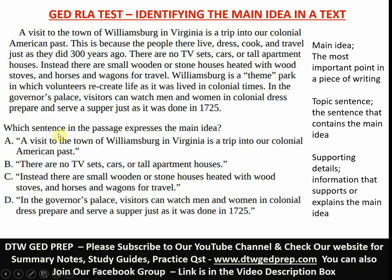So the question is: which sentence in the passage expresses the main idea? Now let's go to the passage. It says: 'A visit to the town of Williamsburg in Virginia is a trip into our colonial American past. This is because the people there live, dress, cook and travel just as they did 300 years ago. There are no TV sets, cars or apartment houses. Instead, there are small wooden or stone houses heated with wood stoves and horses and wagons for travel. Williamsburg is a theme park in which volunteers recreate life as it was lived in colonial times. In the governor's palace, visitors can watch men and women in colonial dress prepare and serve a supper just as it was done in 1725.'